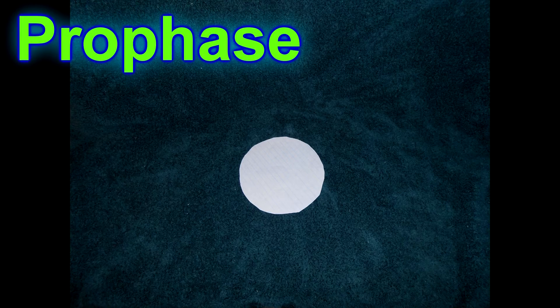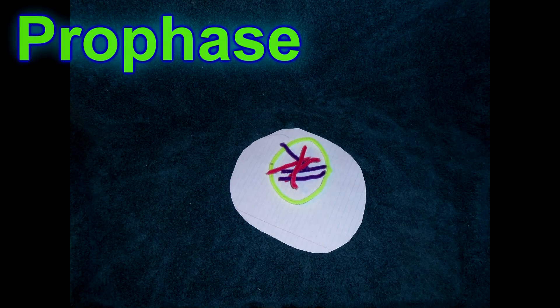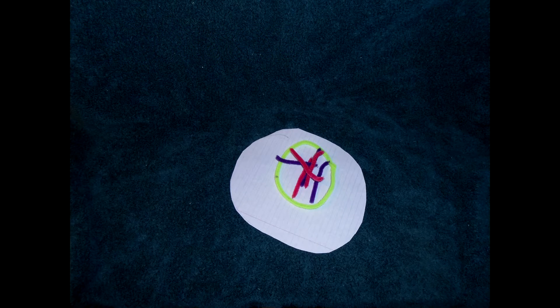First up, prophase. The chromatin in the nucleus of a cell are bundled. The nucleus dissolves and the chromosomes emerge.